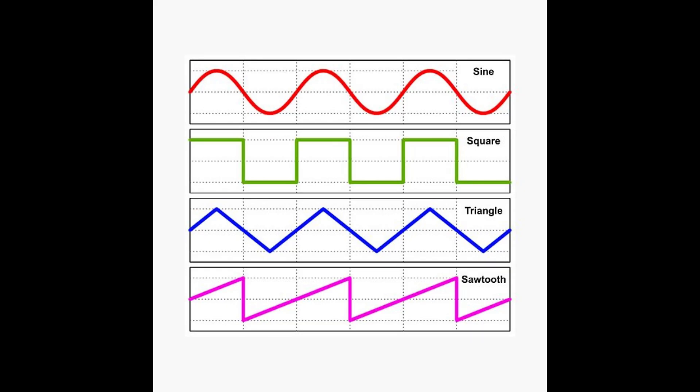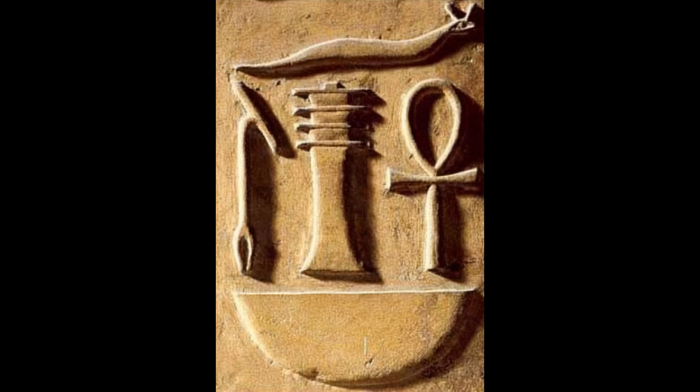Waveforms like square waves, triangle waves, and sawtooth waves contain multiple frequencies, known as harmonics, in addition to their fundamental frequency. These harmonics spread the energy across different frequencies, making them less concentrated compared to a pure sine wave. The undulating movements of the serpent are perfect for symbolizing the way sine waves propagate.